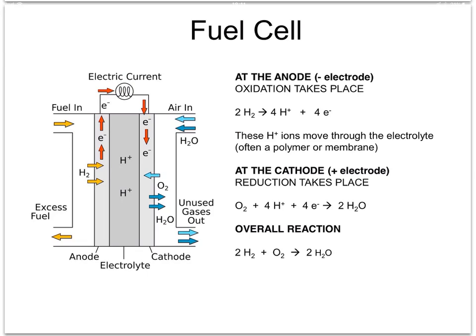At the other electrode, called the cathode, these four hydrogen ions combine with an oxygen molecule from the air or from the oxygen, and the four electrons which have passed through the circuit, to form two water molecules.